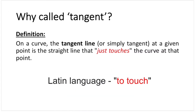Why is it called a tangent? The definition of tangent is that on a curve, the tangent line — or simply tangent — at a given point is the straight line that just touches the curve at that point. So to measure instantaneous rate of change, we're finding the gradient of a line that just touches the curve. The word tangent actually came from the Latin language meaning 'to touch'.